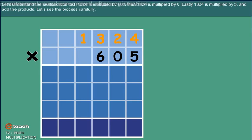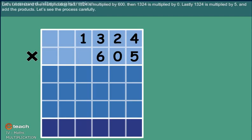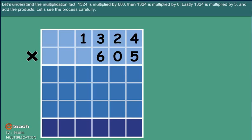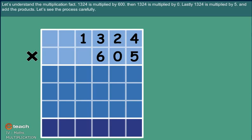1324 is multiplied by 600. Then 1324 is multiplied by 0. Lastly, 1324 is multiplied by 5. And we add the products. Let's see the process carefully.